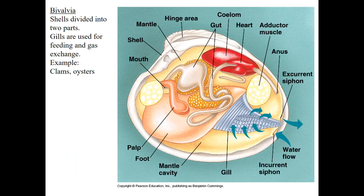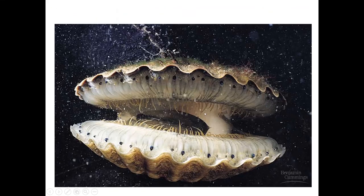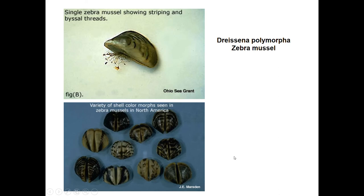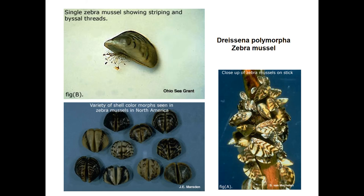Bivalvia: shells are divided into two parts; gills are used for feeding and gas exchange. Examples: clams and oysters. Here is what looks to be a scallop. This is a zebra mussel — it uses basal threads to attach to objects. Here are more varieties of zebra mussels.